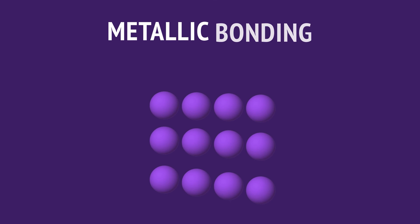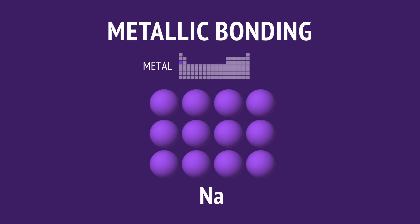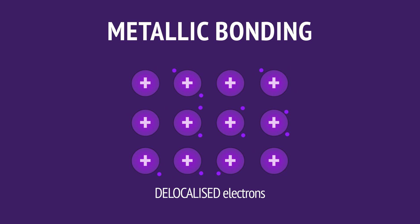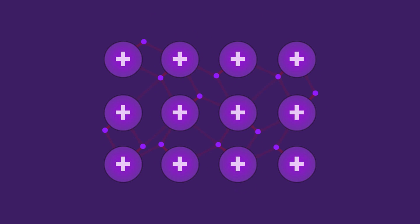A metallic bond occurs between atoms in a metal, like these sodium atoms. The loosely held outer electrons of the sodium atoms are free to move throughout the lattice. The metallic bond is the attraction of the free electrons with the positive cores of the metallic atoms.